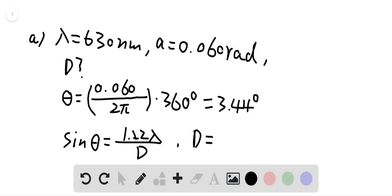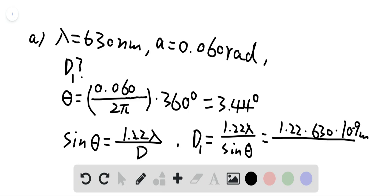So diameter for this case, let's mark it as d1, is equal to 1.22 lambda divided by sin theta, which is 1.22 times 630 times 10 to negative 9 meters, since 1 nanometer is 10 to negative 9 meters, and sin theta, which is sin 3.44 degrees.